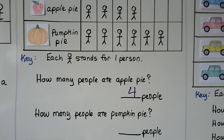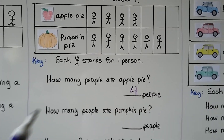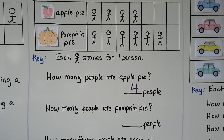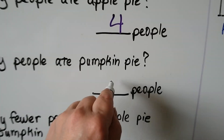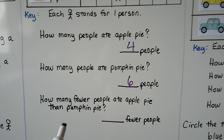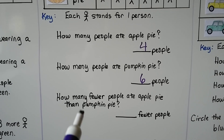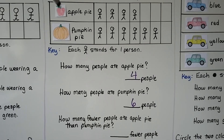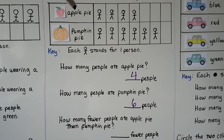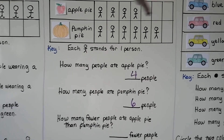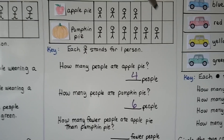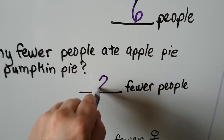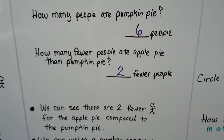How many people ate pumpkin pie? We look at the picture graph and count them — one, two, three, four, five, six. Six people ate pumpkin pie. How many fewer people ate apple pie than pumpkin pie? It wants to know the difference between the apple pie and the pumpkin pie. We look at the picture graph and see these two empty spaces. That's two fewer.